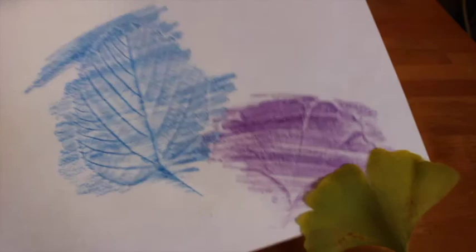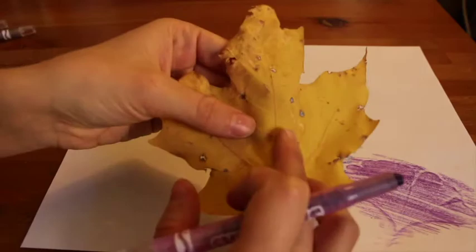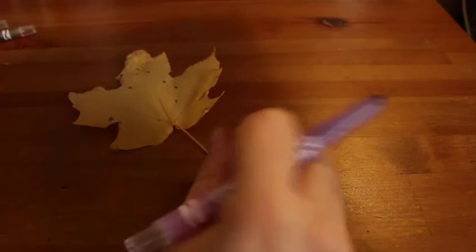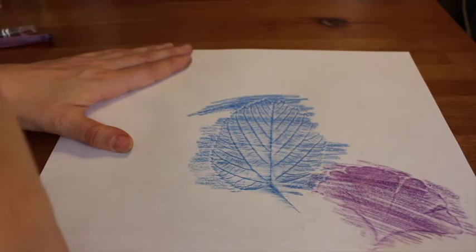I'm going to do one more with you all on this video. I'm going to use the leaf that I haven't used yet, which is a big, beautiful maple leaf. I'm making sure to feel the bumpy side. I want that bumpy side touching my paper. So bumpy side up. I'm going to do this maple leaf rubbing right here in the upper left-hand corner of my paper.